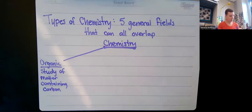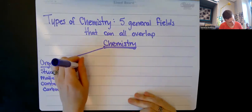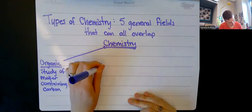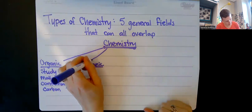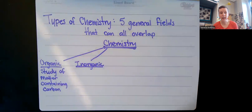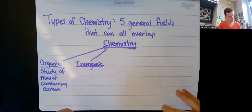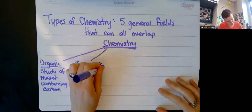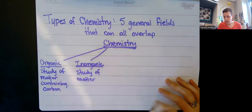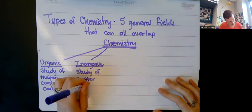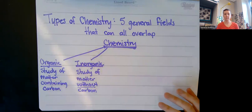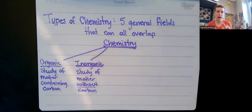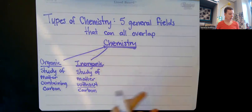The next section is the opposite — inorganic chemistry. It's the same word organic but with 'in' in front of it, meaning not organic, which means it is not made of carbon. So inorganic is the study of matter without carbon. Most commonly, things like rocks, minerals, and metals are going to not have carbon.